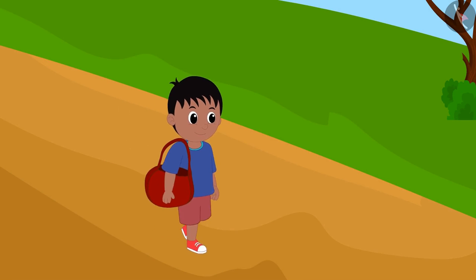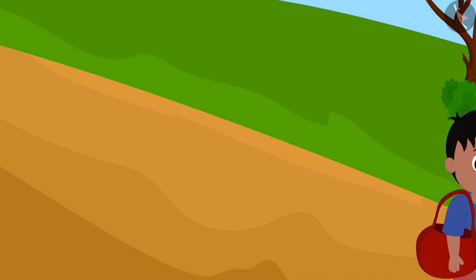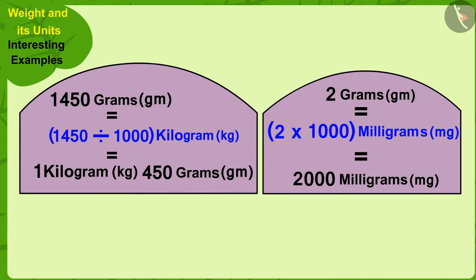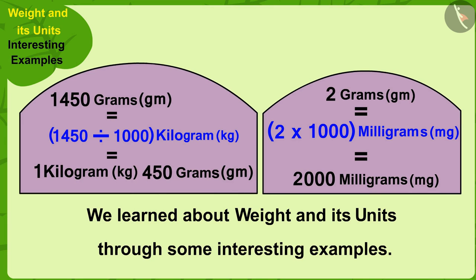Raju bought paneer and saffron from Appu and returned home. Children, in this video, we learned about weight and its units through some interesting examples. In the next video, we will look at some of the misconceptions related to this.